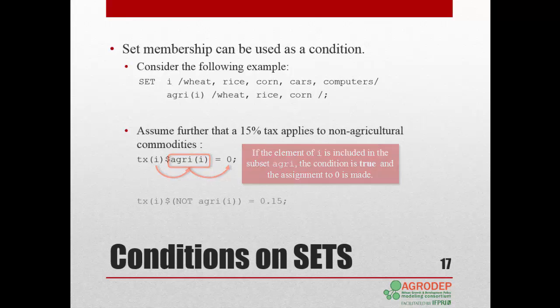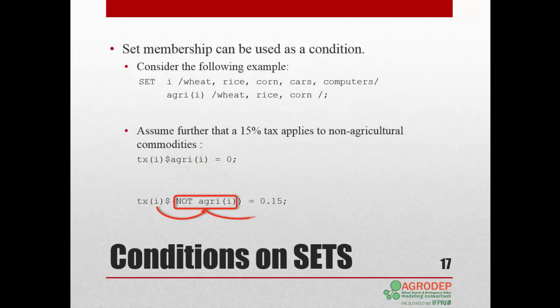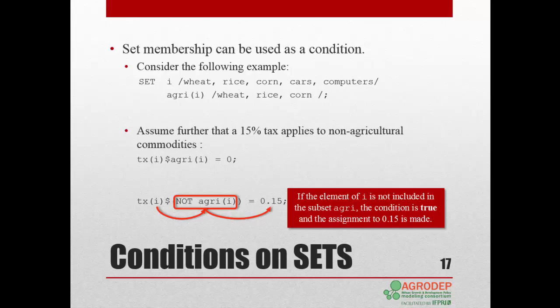Similarly, in this expression, if the element of I is not included in the subset Agri, the condition is true and the assignment of 15% is made. So for cars and computers, the condition is true and the tax will be set to 15%.